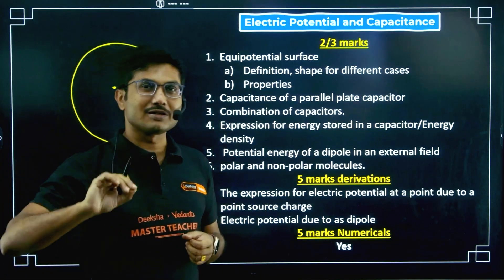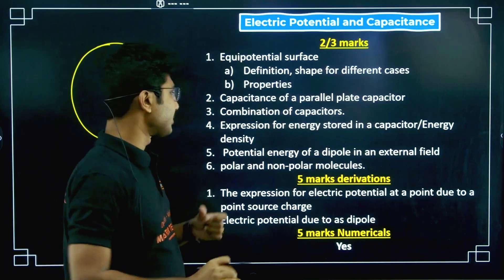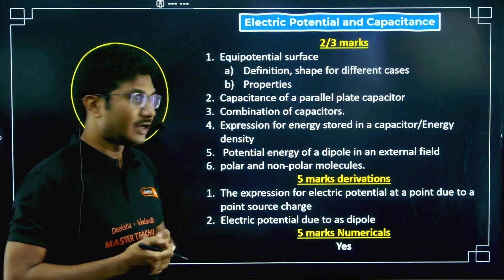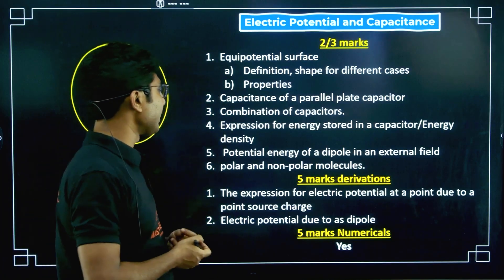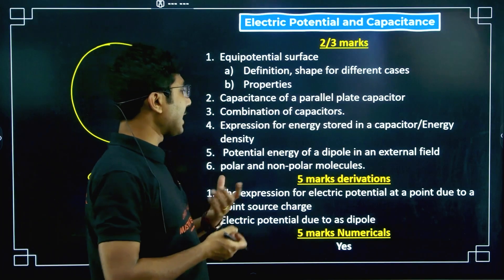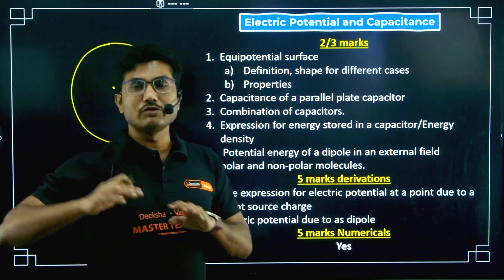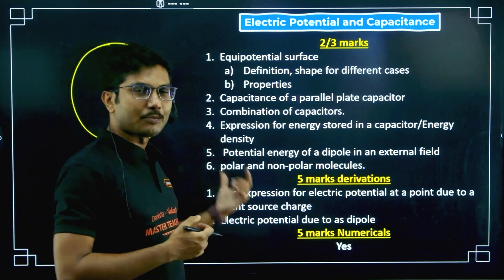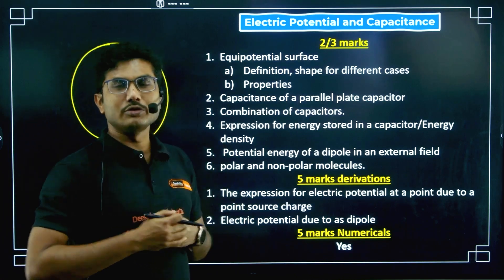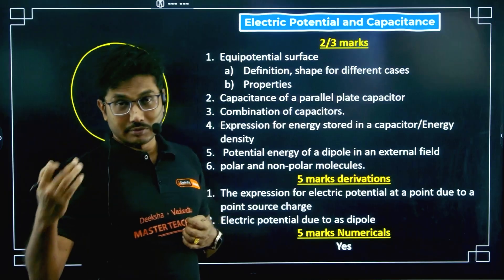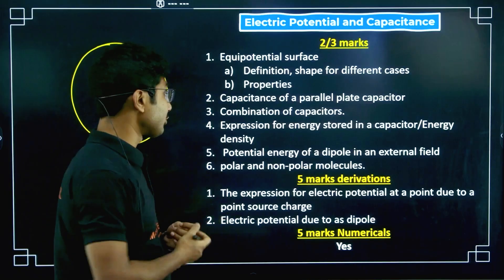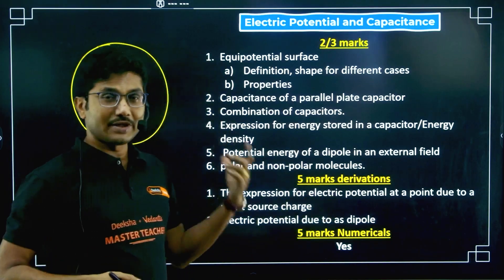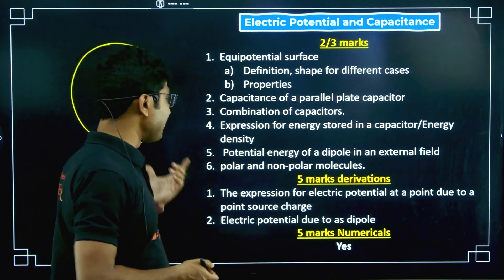Potential energy of a dipole in an external field is very very important. Polar and non-polar molecules — the difference between polar and non-polar, or what are polar molecules — are common questions, and objective questions based on this concept will also come. Now for five-mark derivations, the very very important one from this chapter is the expression for electric potential at a point due to a point source charge.